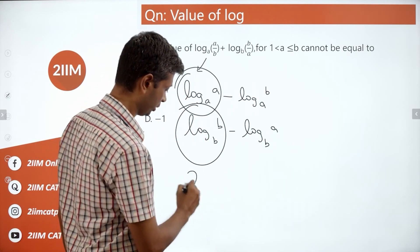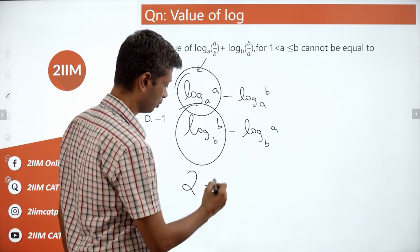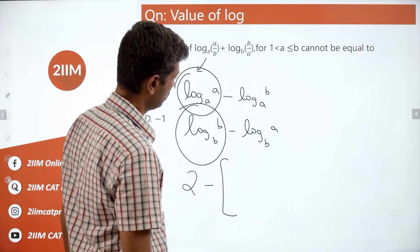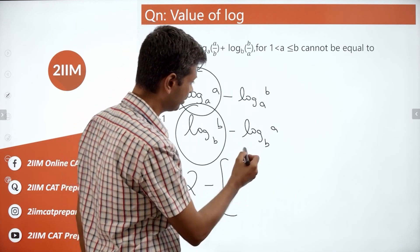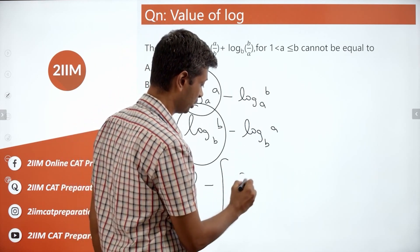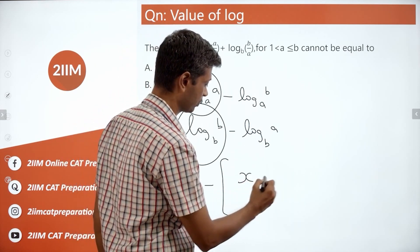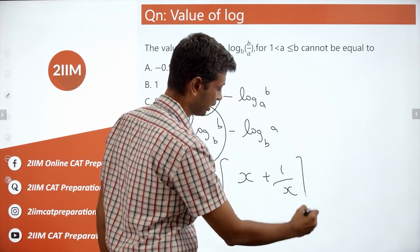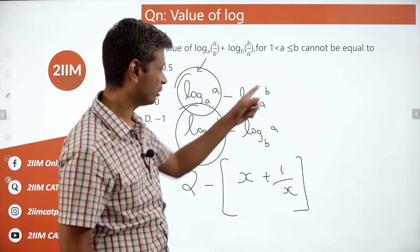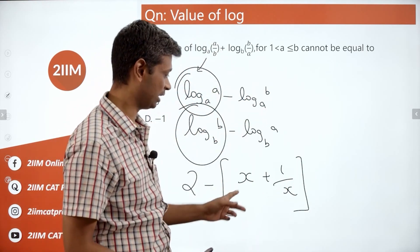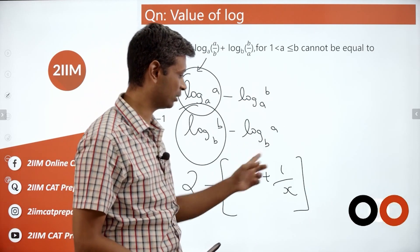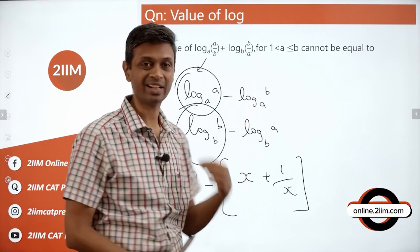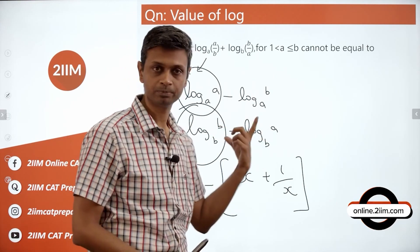So these two give us 2 minus of log b to the base a plus log a to the base b. I'm going to call it as x plus 1 by x. Why? If log b to the base a were x, then log a to the base b would be 1 by x. Log a to the base b is just the reciprocal of log b to the base a.